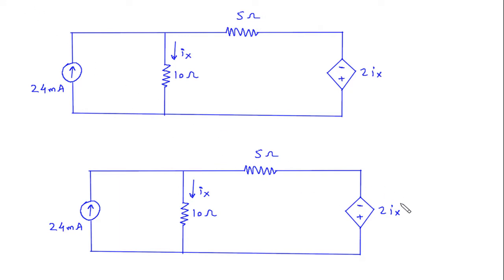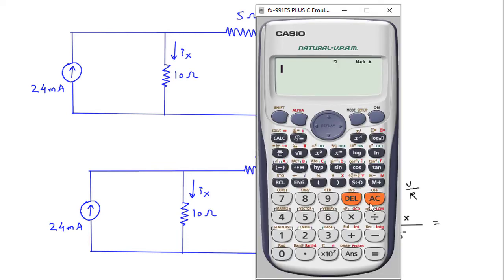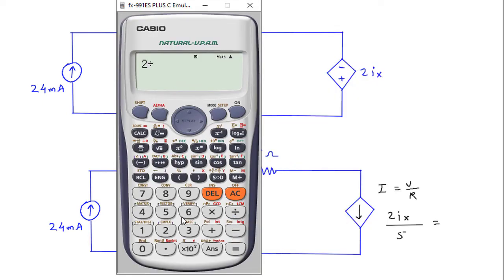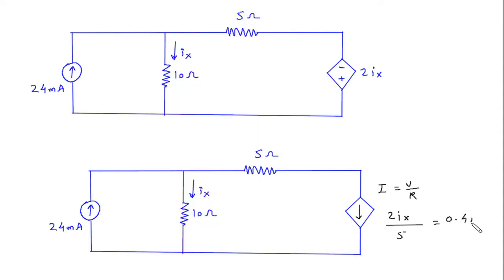So according to the direction of this polarity, the arrow of current source will be in downward direction. This current is equal to V by R, here V by R where V is 2Ix and R is 5 Ohm, so this will be 2 by 5 equals 0.4 Ix and this will be in parallel with this 5 Ohm.